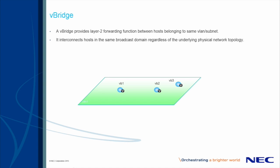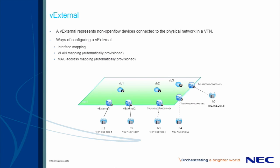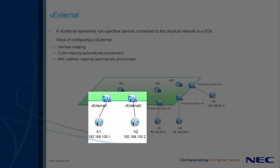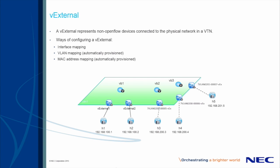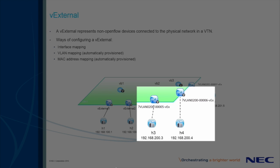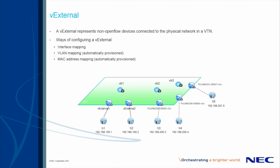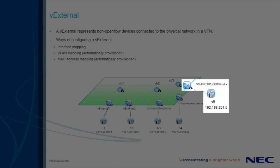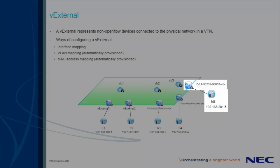Next, we shall illustrate V-externals, which enable the mapping of external hosts into the Virtual Tenant Network. The V-external is like a gateway to ensure external hosts, such as servers, VMs, or network devices, are mapped to a specific Virtual Tenant Network. There are three methods for mapping external hosts. The first is by physical interface, which is the method used for V-external 1 and V-external 2, which map to the H1 and H2 external hosts. The second is by VLAN ID, which is the method used for H3 and H4, where VLAN mapping allows for the dynamic creation of V-externals. The last method is by MAC address, illustrated for H5, which also allows for the dynamic creation of V-externals.